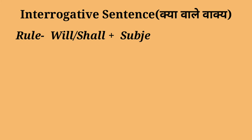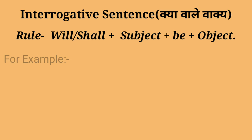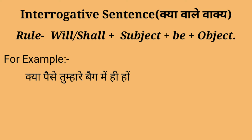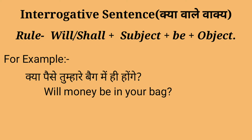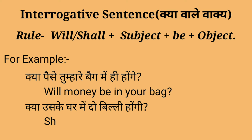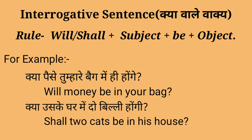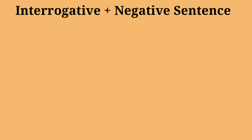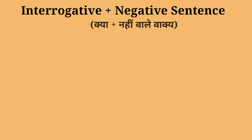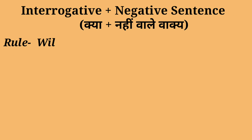Next is interrogative sentence — arthat 'kya' wale vaakya. For making this we use: Will/shall + subject + be + object. For example: Kya paise tumhare bag mein hi honge — Will the money be in your bag? Kya uske ghar mein do billi hongi — Shall two cats be in his house?